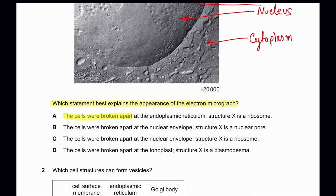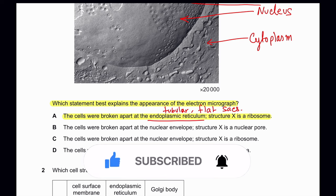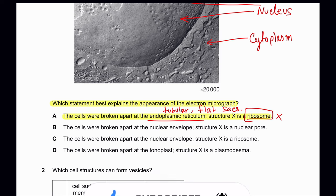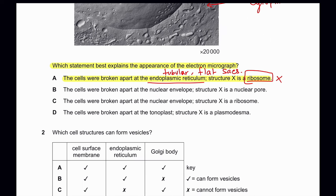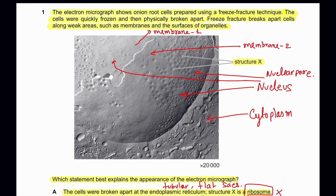Looking at the options: Option A says the cells were broken apart at the endoplasmic reticulum and structure X is a ribosome. Endoplasmic reticulum is either tubular or flat sacs, but this structure is large and round. So these structures are not ribosomes, and option A is not correct. Option B says cells were broken apart at the nuclear envelope and structure X is a nuclear pore — this matches our assumption, since we see a double membrane with the same structure visible inside and outside. Nuclear envelope is a double membrane.